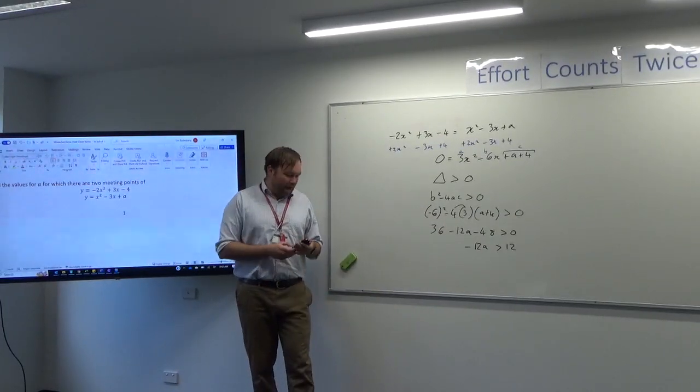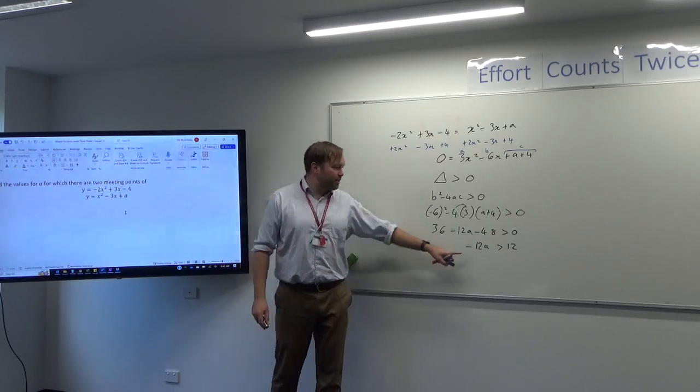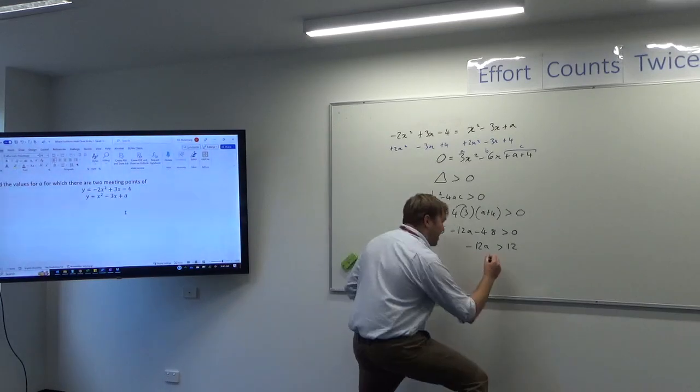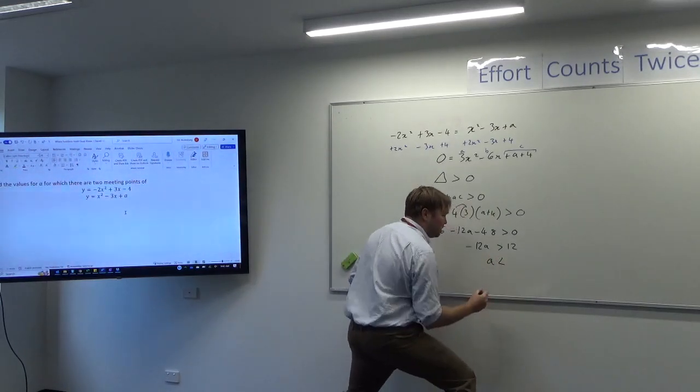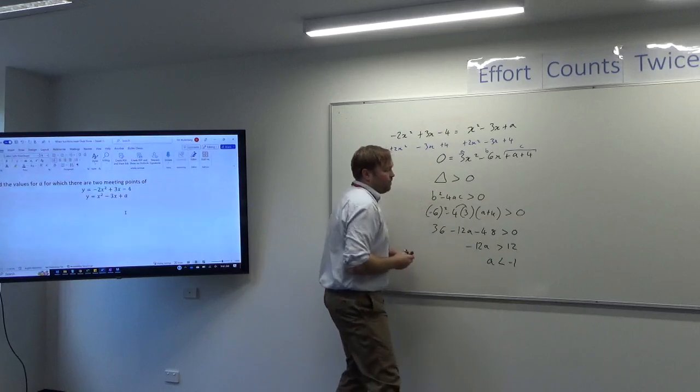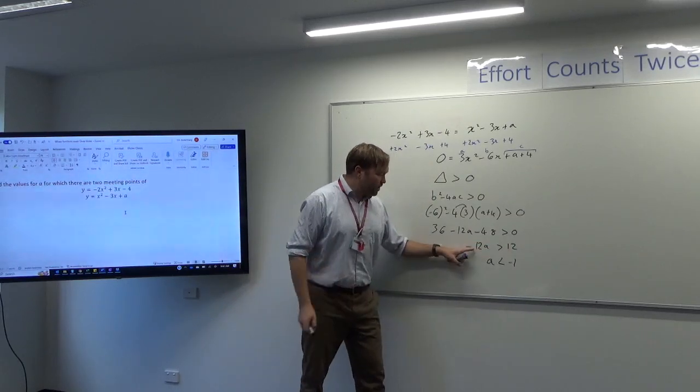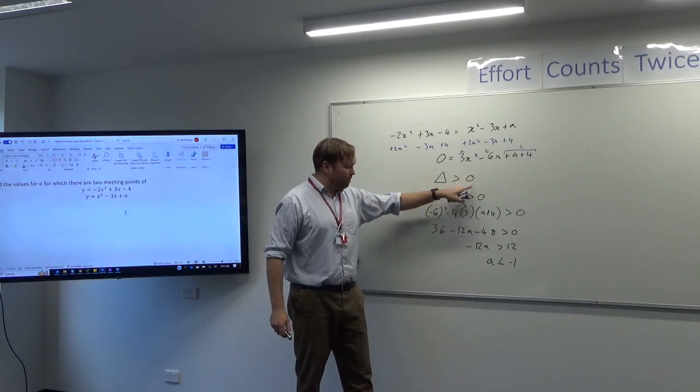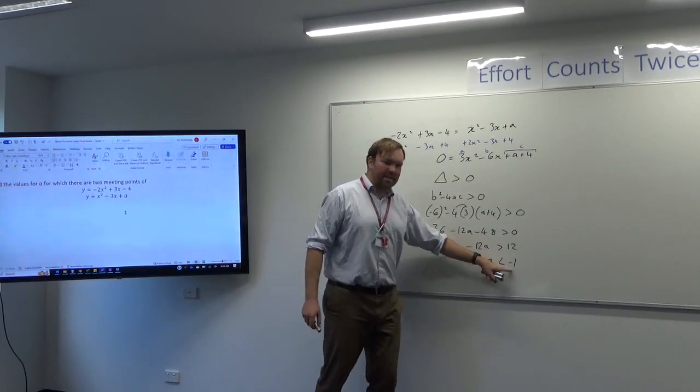That's the effect of combining 36 to the minus 48 and then throwing it to the other side of the equation. Now, here comes the trap with inequalities. If I divide by a negative, I must flip the sign. So therefore, A sign flips to negative 1. Because 12 divided by negative 12 is negative 1. So the discriminant is positive when A is less than negative 1.